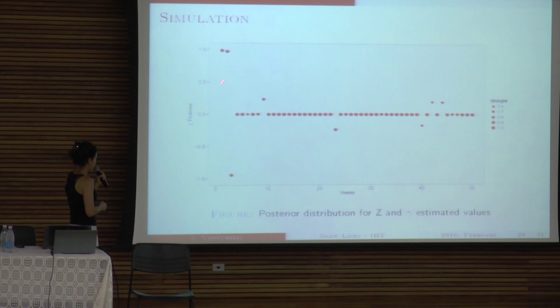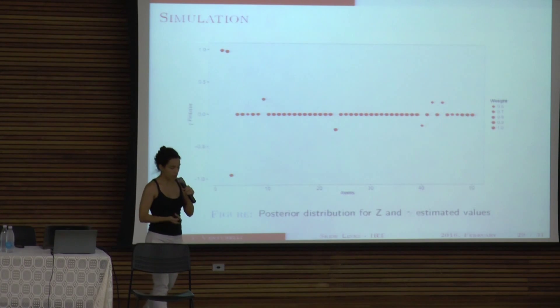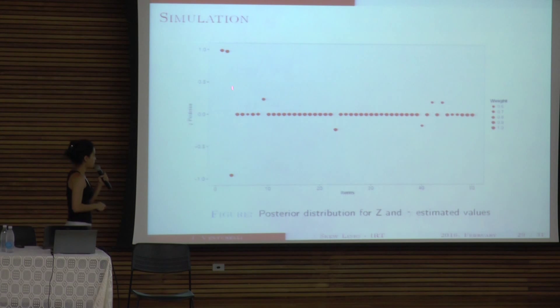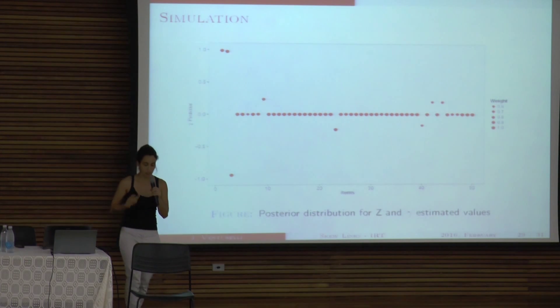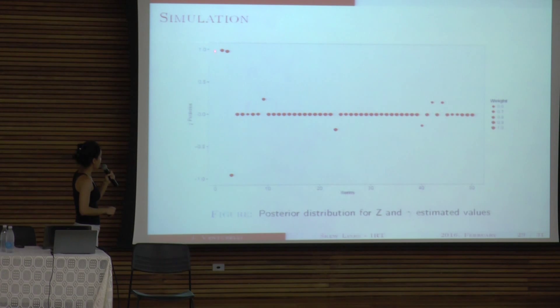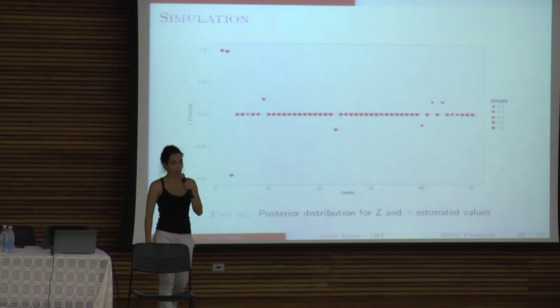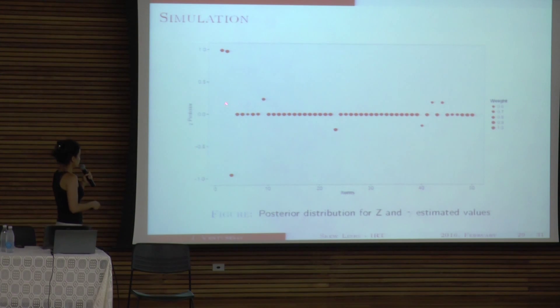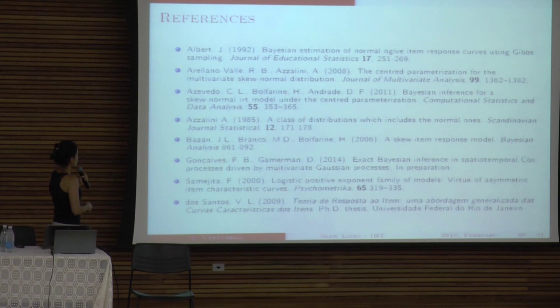So at the end, we have something that looks like this. And what it gives to me is this is the posterior of Z and the estimated values for gamma. So the size of the bubble gives me the probability that the model is either symmetric, negative, or positive. So the higher the probability, the higher should be the bubble. And so for each item, I would have three bubbles, which shows me how likely that item is symmetric or asymmetric. And the point that the bubble is at, shows me the estimated value of gamma. So here I have like 50 items.